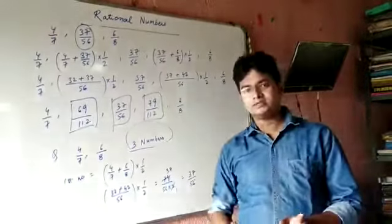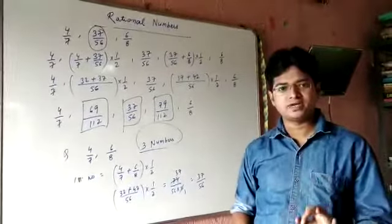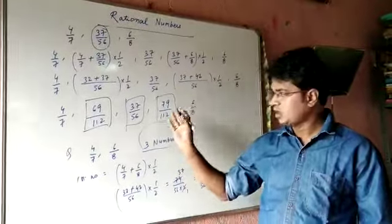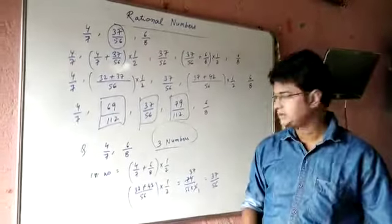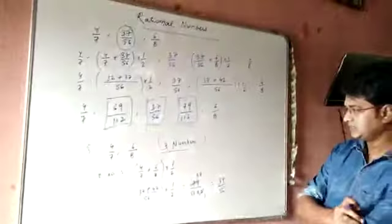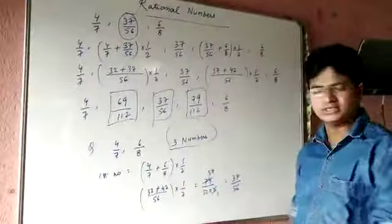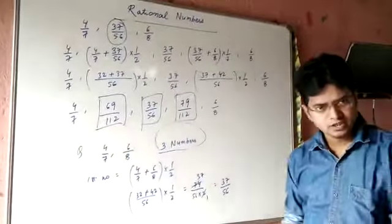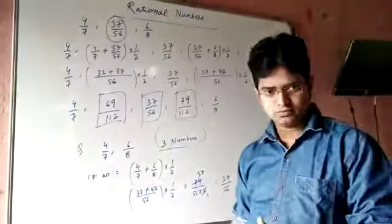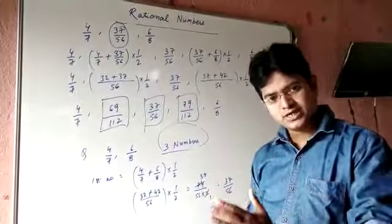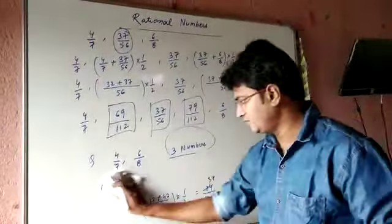Between two rational numbers, you can insert an infinite number of rational numbers. The first method is clear: you add both the numbers and divide by two. You can continue this process and get as many numbers as you want to find out.